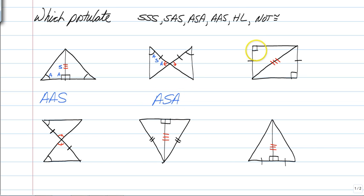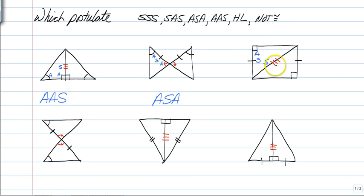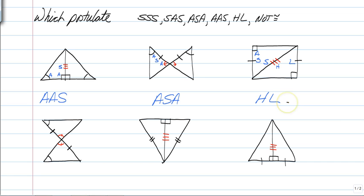This one has a right angle — so you have an angle, a side, and a side. You might think that's angle-side-side, but since it's a right angle, this is actually a hypotenuse and a leg. So this is allowed — angle-side-side with right angles is called HL.